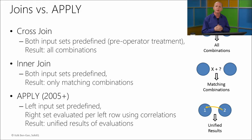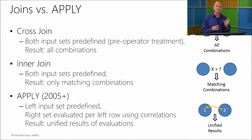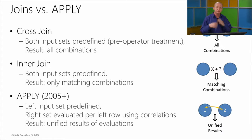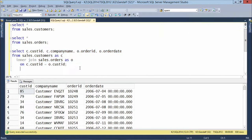Now let's think about what the join cannot do — and this is where the apply operator solves the problem. What the join cannot do is have one set that is predefined but have the other set be created separately for each row in the left set, based on elements collected from that left set. For example, instead of matching all orders with customers, what if for each customer we want to return only a certain number of its most recent orders?